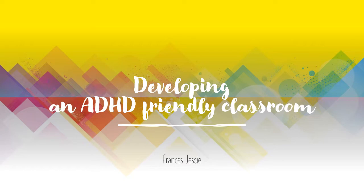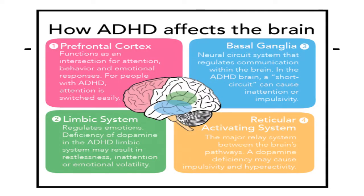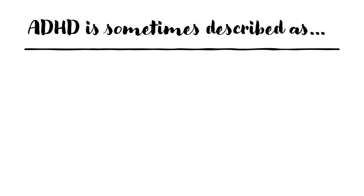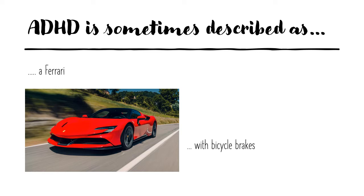Welcome to Developing an ADHD Friendly Classroom. First, the science: how ADHD affects the brain. The prefrontal cortex functions as an intersection for attention, behavior, and emotional responses. For people with ADHD, attention is switched easily. The limbic system, which regulates emotions, has a dopamine deficiency that can result in restlessness, inattention, or emotional volatility. The basal ganglia, a neural circuit system regulating communication within the brain, can short-circuit and cause inattention or impulsivity. The reticular activating system is the major relay system between the brain's pathways — a dopamine deficiency may cause impulsivity and hyperactivity. ADHD is sometimes described as a little like a Ferrari with bicycle brakes.